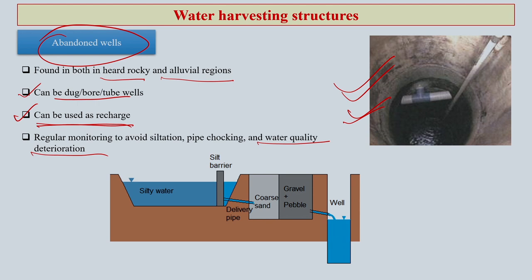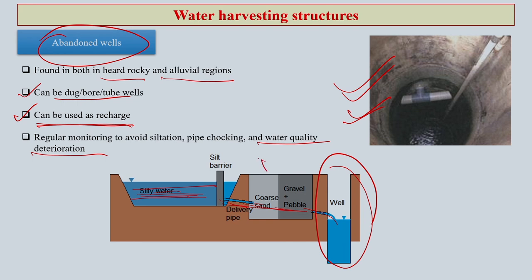Regular monitoring is very important for this purpose. For an abandoned well, if you have a stream nearby as the water source, you can have some delivery pipes from the water stream passing through coarse sand and gravel and pebbles before going into the well. This provides a kind of small filtering of the harvested water and helps avoid the chances of contamination.